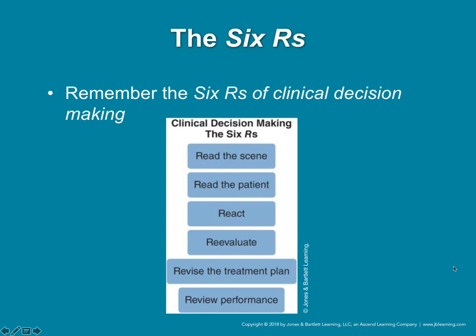Here are the six R's of clinical decision-making: Read the scene. Read the patient. React. Re-evaluate. Revise the treatment plan. Review performance. This mirrors what we just went over in the steps for critical thinking and clinical decision-making. It's all the same idea — being able to respond to situations, figure out what's going on, come up with a good plan, execute that plan, review that plan, and after it's over, review it again. And then you're building your knowledge base.